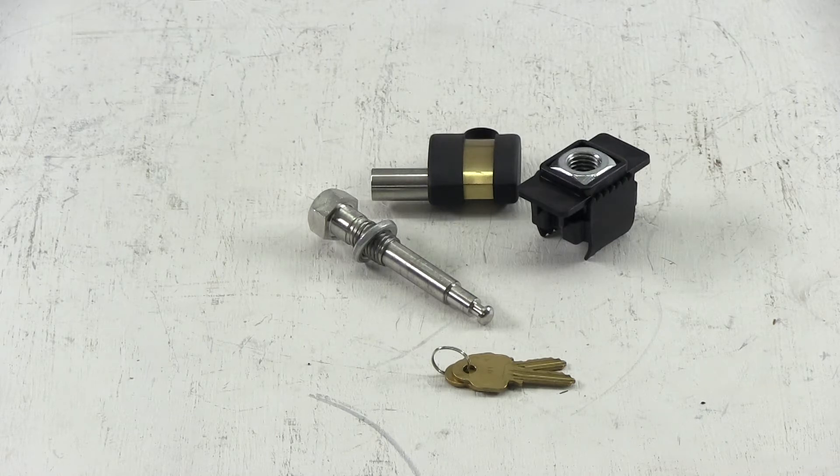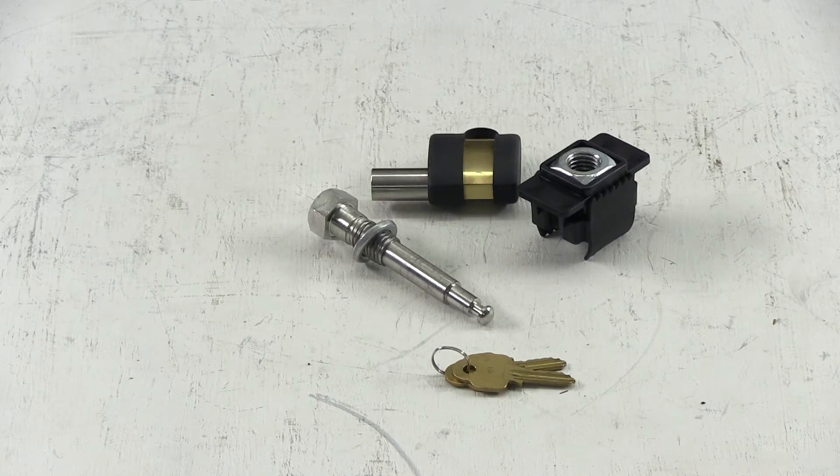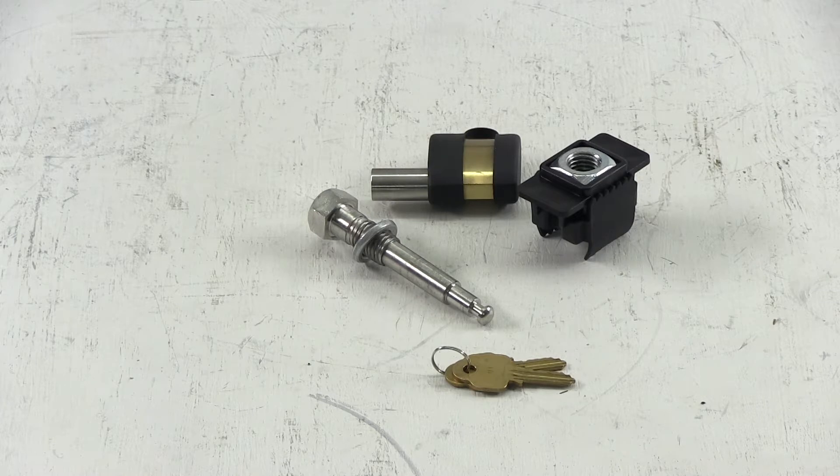Today we're going to show you the SoftRide Stainless Steel Locking Anti-Rattle Threaded Hitch Pin for 2-inch Trailer Hitches, part number SR25219.